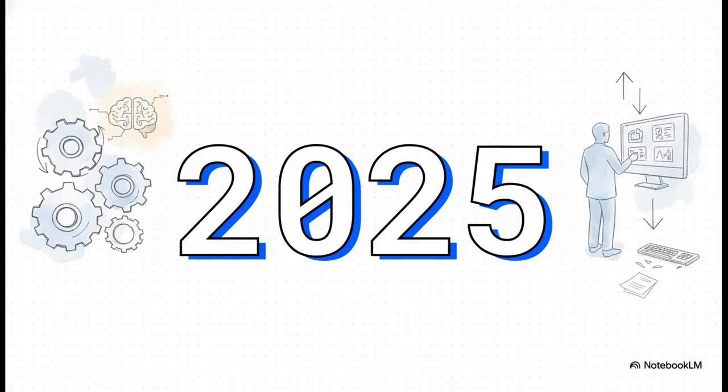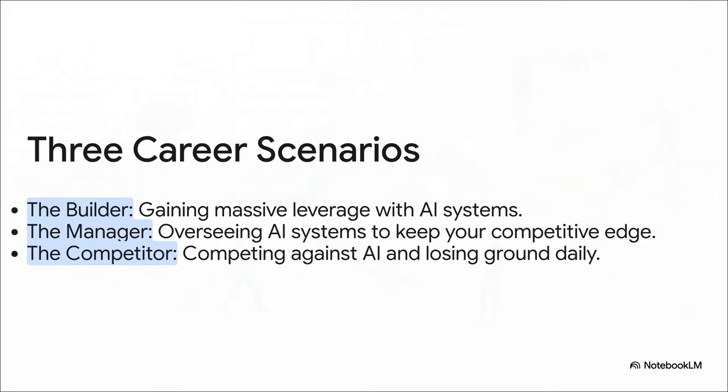And here is the brutal reality of that acceleration. By the end of next year, just 12 months from now, pretty much any task you do on a computer can and will be automated. The only question is, are you going to be the person doing the automating or the person being automated? This really boils down to three possible roles for you in this new world.